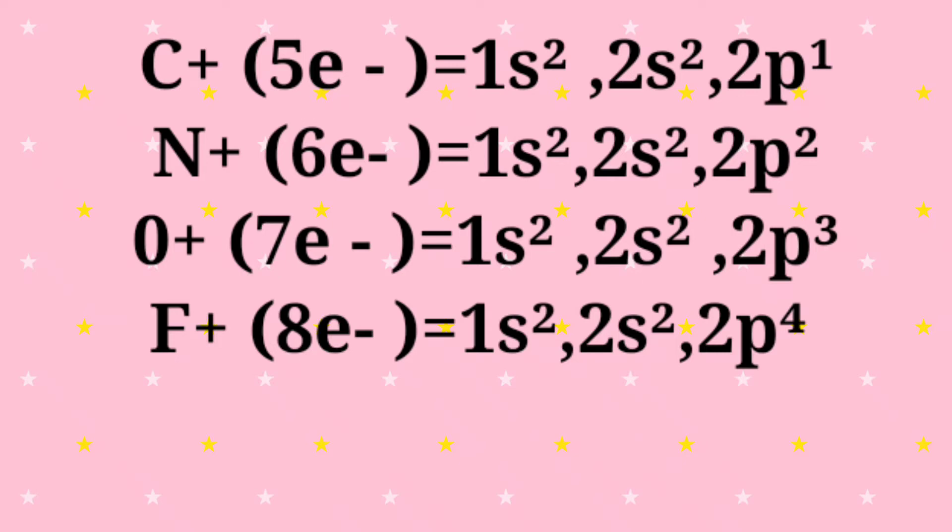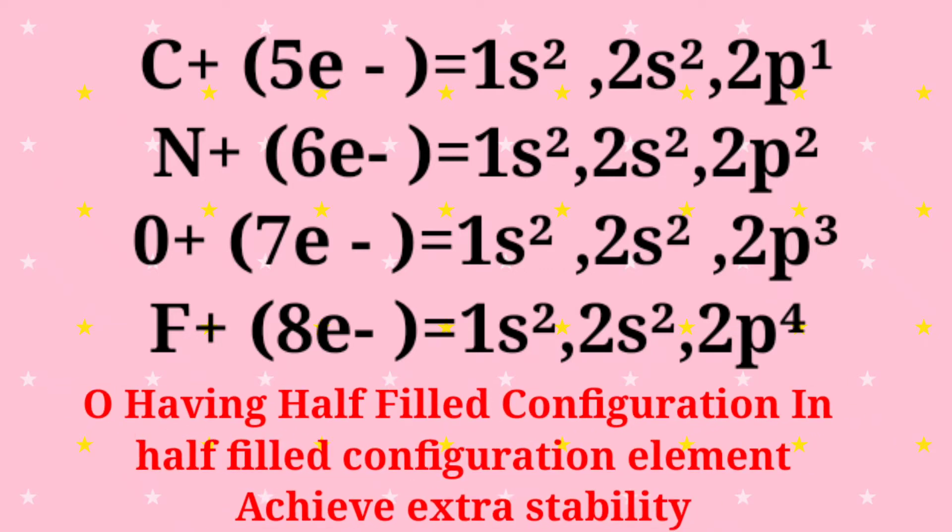Now observe the configuration of each element. Oxygen's configuration is 2p³. The valence shell configuration is 2p³. That means oxygen possesses a half-filled p sub-shell in its valence shell, which is more symmetrical and more stable.